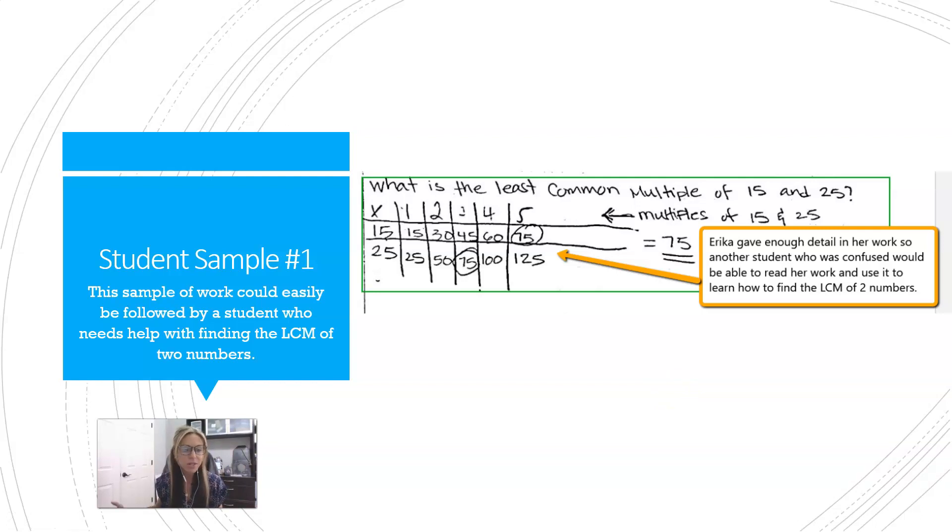It's always nice to see what other students have done to earn that exemplary column on the rubric. Here's Erica. Notice how she gave enough detail in her work so another student who was confused would be able to read her work and use it to find the LCM of two numbers.